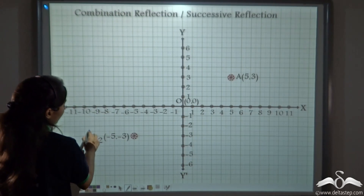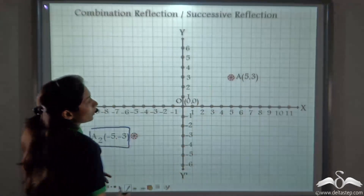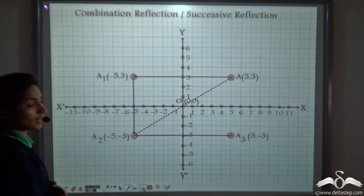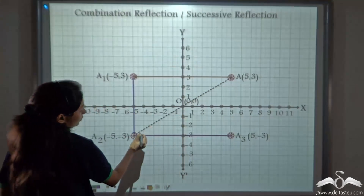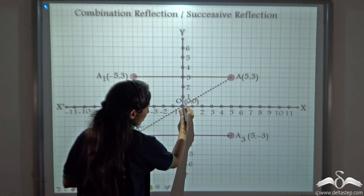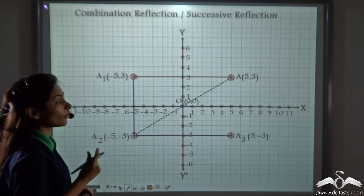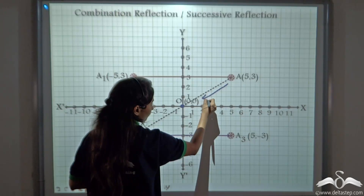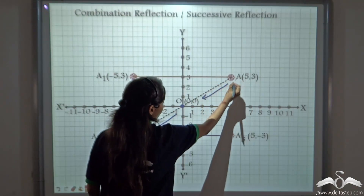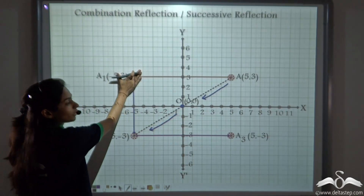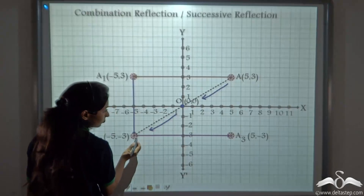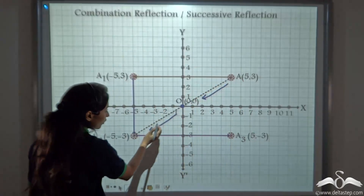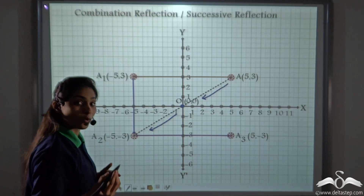What if I want only the image A2 from object A, without A1 in between? I can reflect it through the origin. The origin can also act as a point of mirror for us. Reflecting A through the origin, we go this way and this way — we can directly get A2 from A. Whenever we reflect a point through the origin, both the sign of the x coordinate and the y coordinate change.